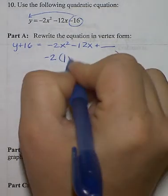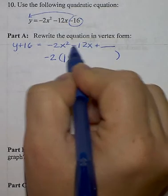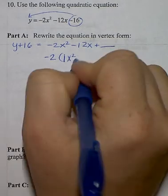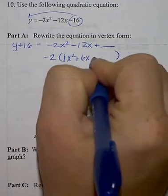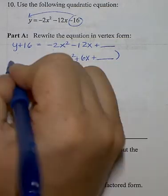Bring down the x squared. Negative 12 divided by negative 2 is 6. Bring down the x. And here's the blank and the 16 going to the opposite side.